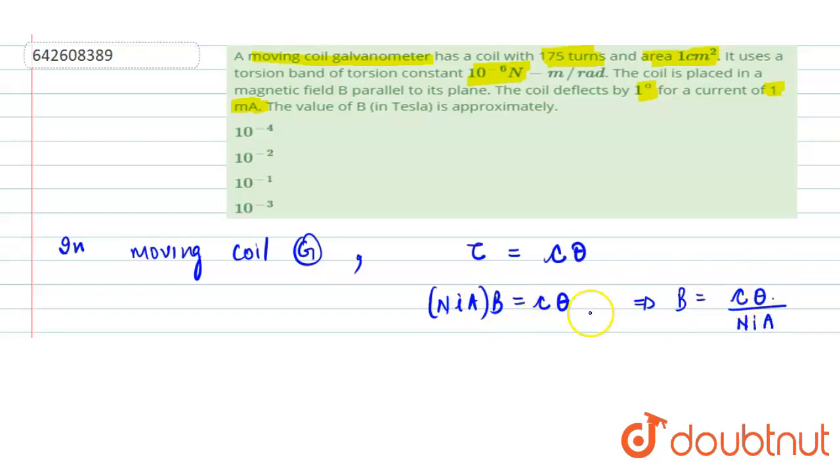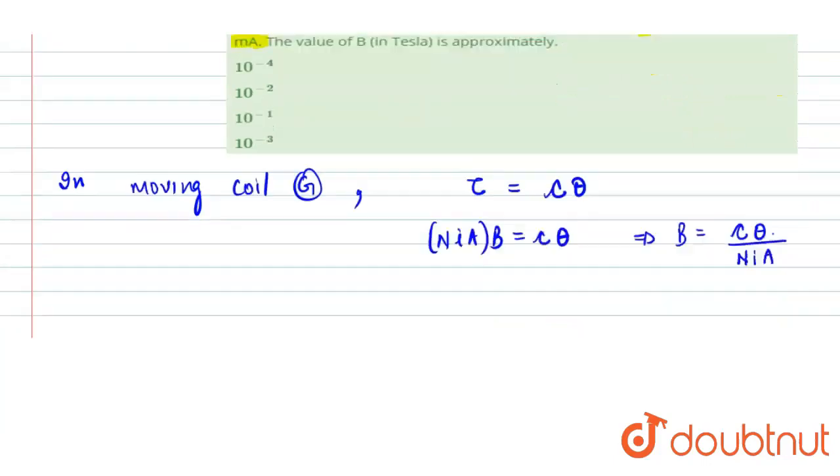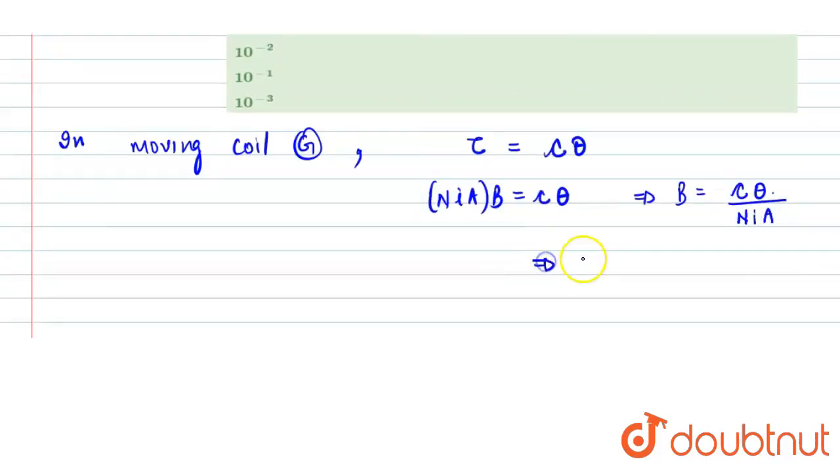Now we are given with the value of C. C is the torsional constant which is 10 raised to minus 6, and theta is 1 degree. So we know 1 degree is equal to pi by 180 radian, so we will put 1 degree as pi by 180.